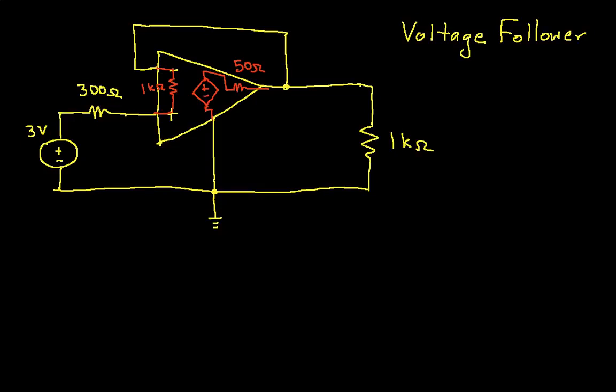So for this case, we'll say that the output is 10 times the voltage at the non-inverting node minus the voltage at the inverting node. Both of these voltages, by the way, are referenced with respect to this ground node.